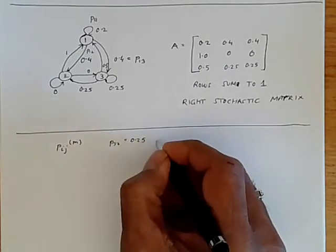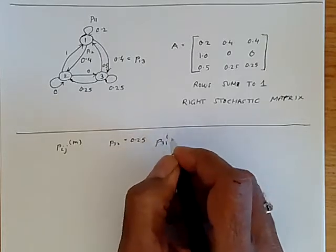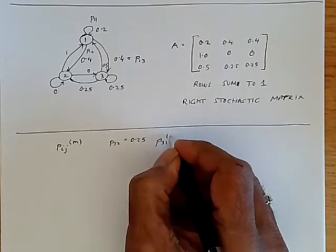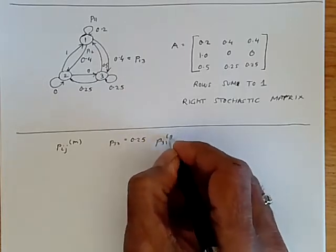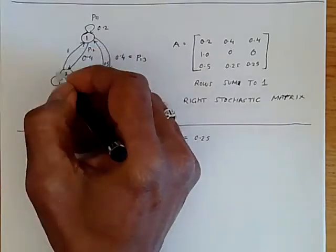But then to go from three to one in two steps, which is P31, is going to be 0.25 again, because that probability is one.